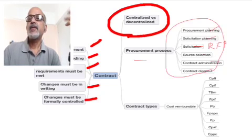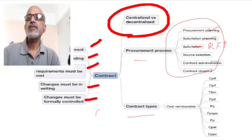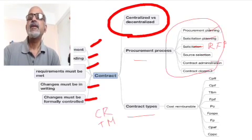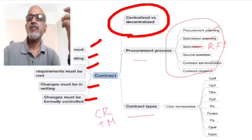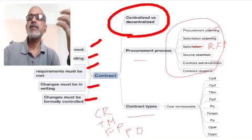Now let us look at the different types of contracts. Basically there are four types: cost reimbursable, time and material, fixed price, and purchase order.